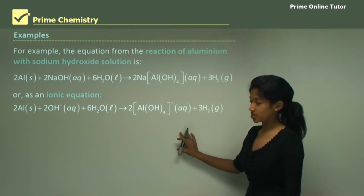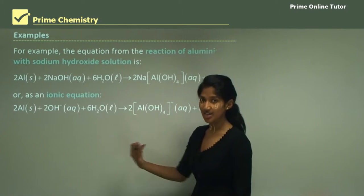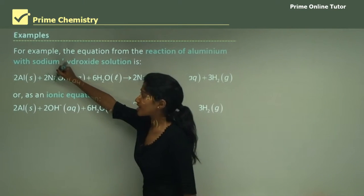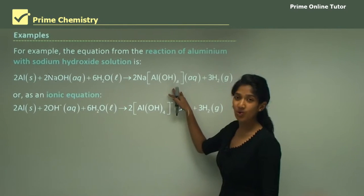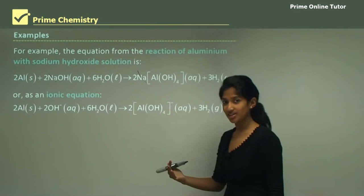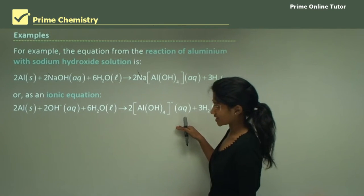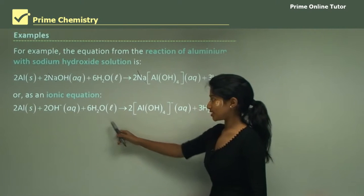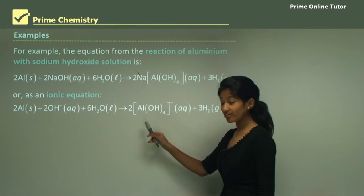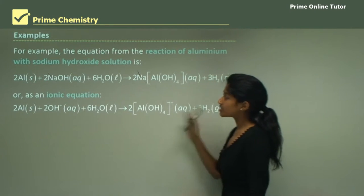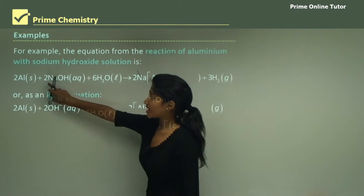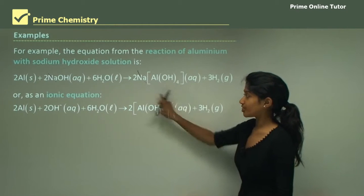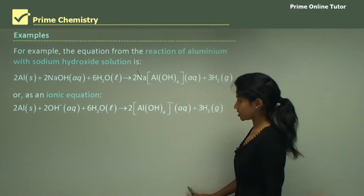When writing the ionic equation, remove the spectator ions. Sodium appears in a compound on both sides, making it the spectator ion. Taking out the spectator ions, we write: aluminium reacting with hydroxide and water, giving 2 aluminate ions and hydrogen gas. The coefficients from the balanced equation carry over directly to the ionic equation.